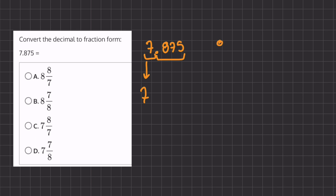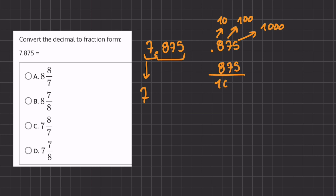Let's take 875. We know that this 8 is part of the 10's place, this 7 is part of the 100's place, and this 5 is part of the 1,000's place. Meaning that we can write this decimal as 875 all over 1,000.